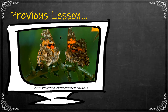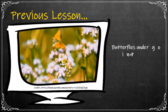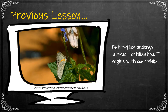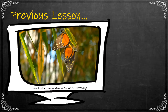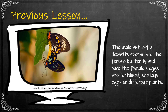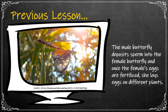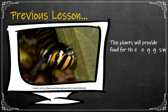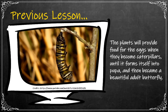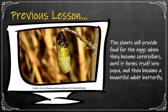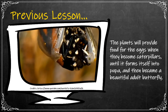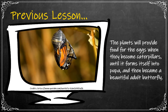Based on the previous lesson, you have learned that butterflies undergo internal fertilization. It begins with courtship, then the male and female butterflies are ready to mate. The male butterfly deposits sperm into the female butterfly, and once the female's eggs are fertilized, she lays eggs on different plants. The plants will provide food for the eggs when they become caterpillars, until they form themselves into pupa, and then become a beautiful adult butterfly.